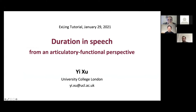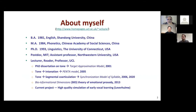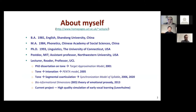I was also asked to say a few things about myself. I got my bachelor's degree from China at Shandong University. I got my first master's degree in phonetics from the Chinese Academy of Social Sciences in China, and my PhD from the University of Connecticut in linguistics. I did my postdoc at MIT and was assistant professor at Northwestern University. Then starting from 2004, I was at UCL, going through lecturer, reader, and professor.